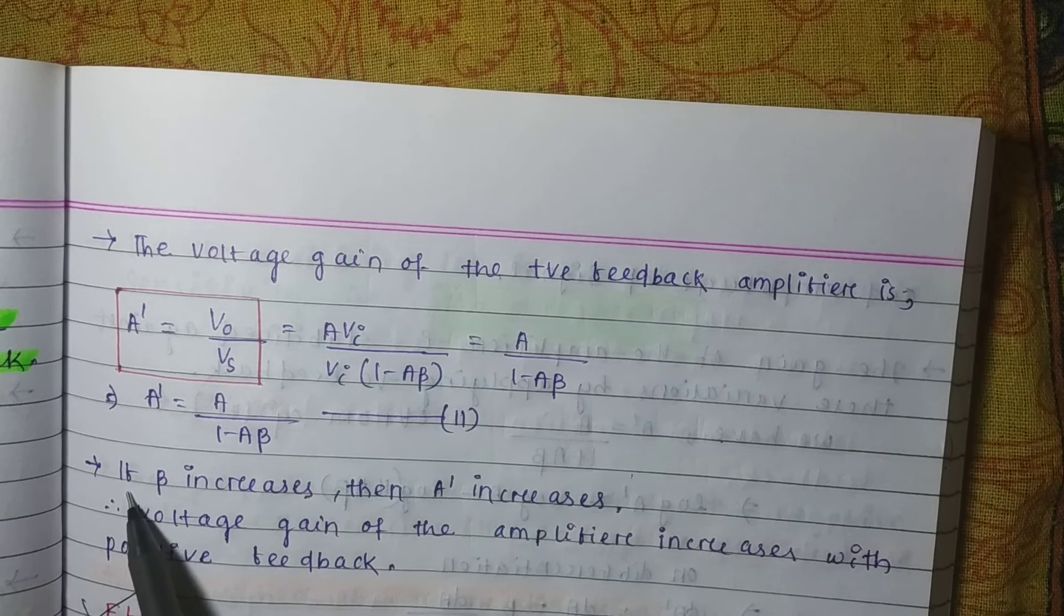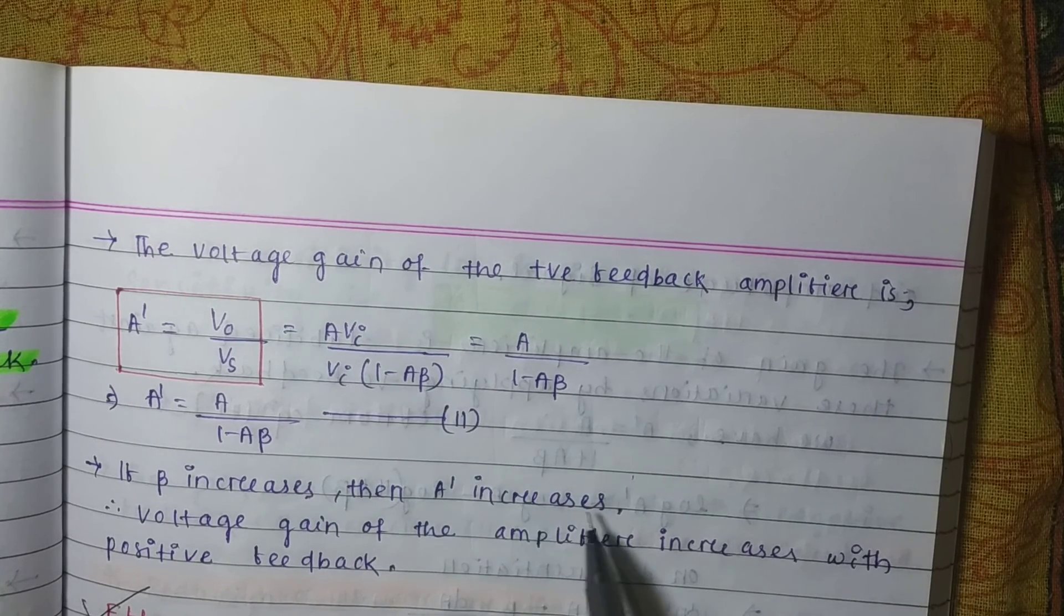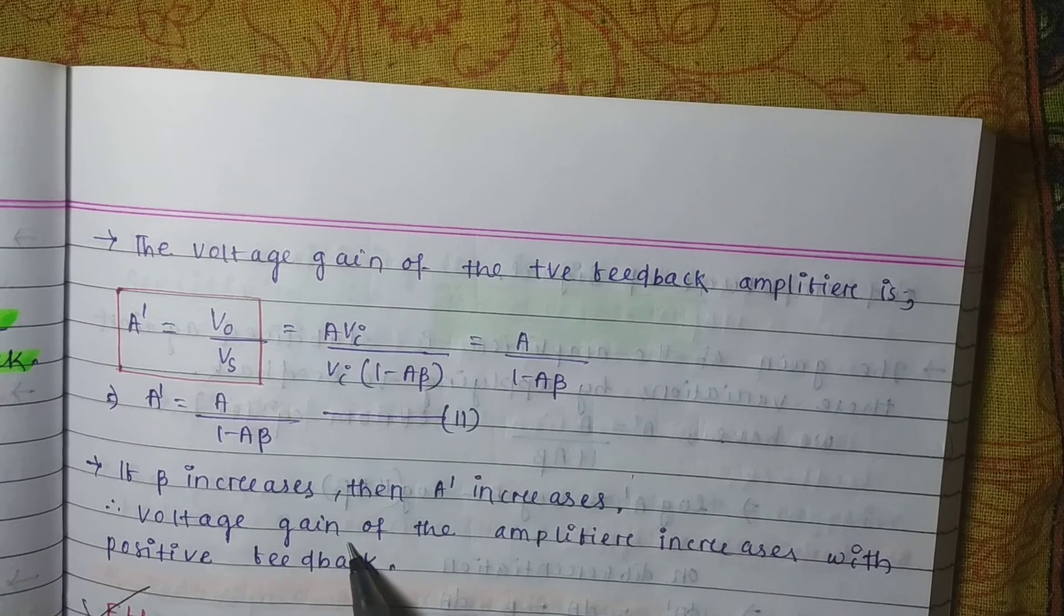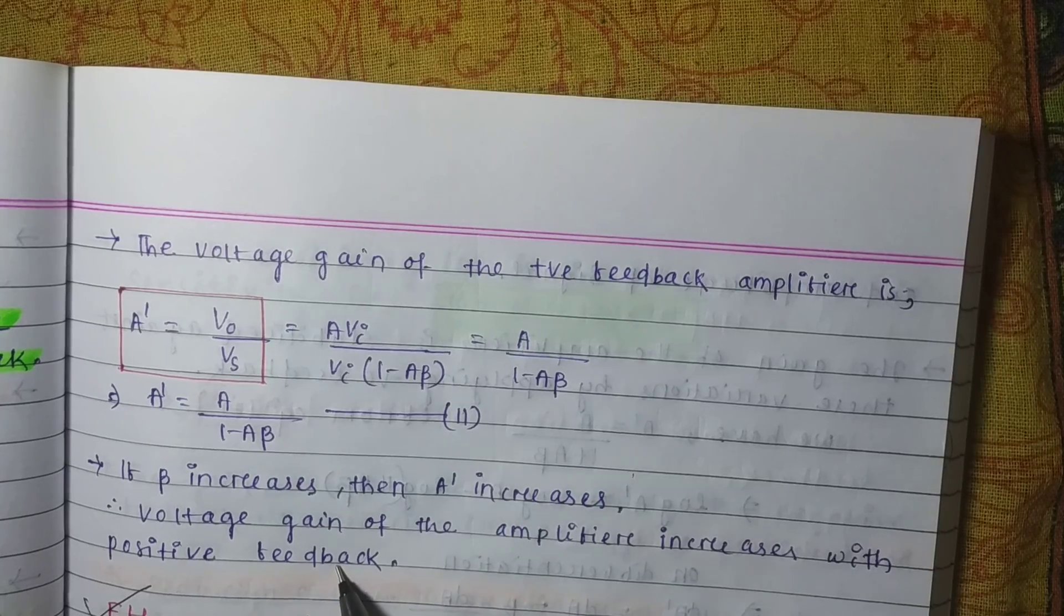If beta increases, then A prime also increases. Voltage gain of the amplifier increases with positive feedback.